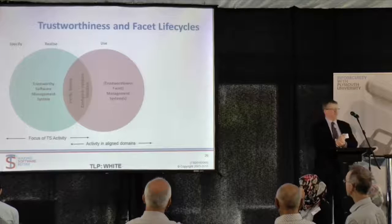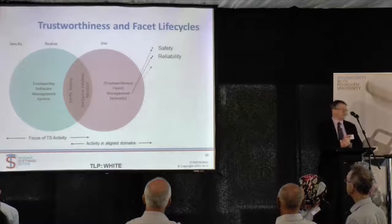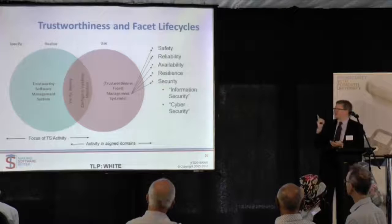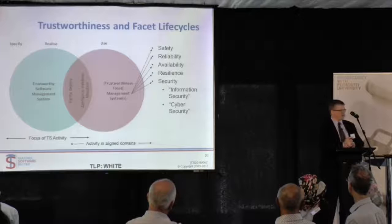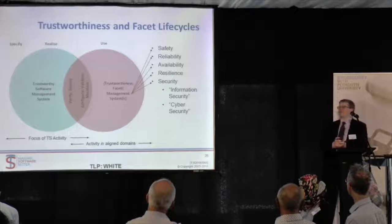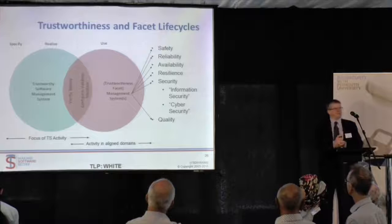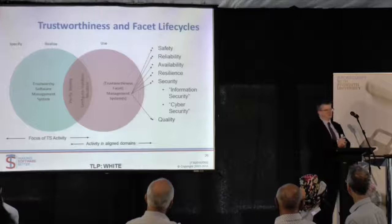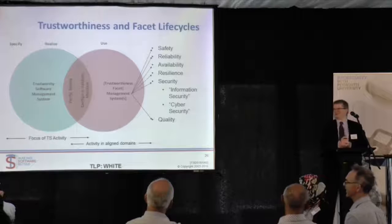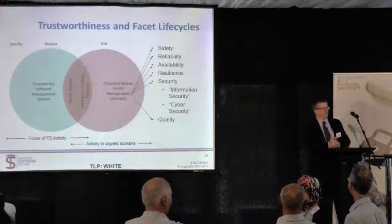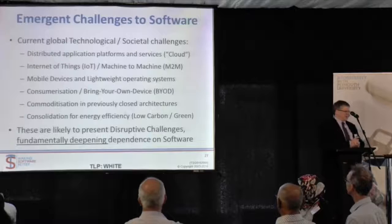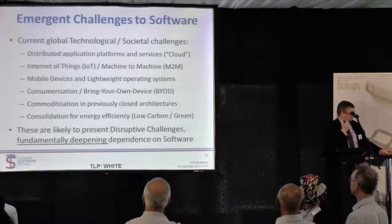You can delineate them this way: a Trustworthy Software Management System sits largely in specification and realization; various in-life management systems cover the use phase; things like verification, deployment, configuration, validation, and maintenance sit on the boundary. Our focus is very much the first part. The aligned domains — safety, reliability, availability, resilience, security — and then you have the terminology split between information security and cyber security, and quality, though some managers are averse to that word after the TQM experience of the 1990s.